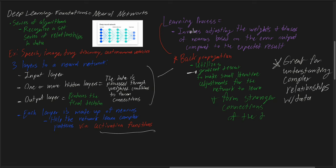Overall, neural networks are great for understanding complex relationships with data, and we can think of many different examples and processes that could be applied within neural networks. Now let's head over to our concept example.